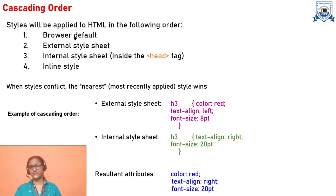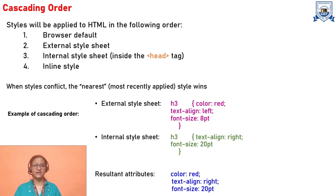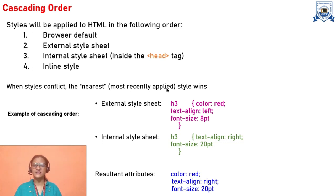If the style has been given in all portions — browser, external style sheet, internal style, or inline — and styles conflict, the nearest and most recently applied always wins. For example, suppose for p, the browser has its own style, external has a different style, internal has another style, and inline has yet another style. What will p show? When style conflicts, the most recent one wins.